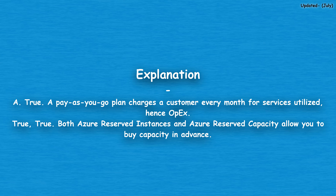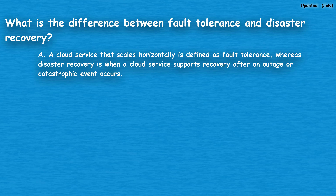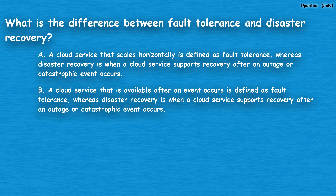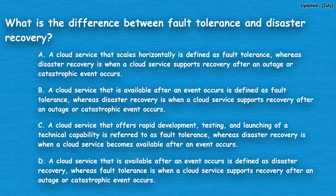The next question: what is the difference between fault tolerance and disaster recovery? Option A: a cloud service that scales horizontally is defined as fault tolerance, whereas disaster recovery is when a cloud service supports recovery after an outage or catastrophic event. Option B: a cloud service that is available after an event occurs is defined as fault tolerance, whereas disaster recovery is when a cloud service supports recovery after an outage or catastrophic event. Option C: a cloud service that offers rapid development, testing, and launching of a technical capability is referred to as fault tolerance, whereas disaster recovery is when a cloud service becomes available after an event occurs. Option D: a cloud service that is available after an event occurs is defined as disaster recovery, whereas fault tolerance is when a cloud service supports recovery after an outage or catastrophic event.